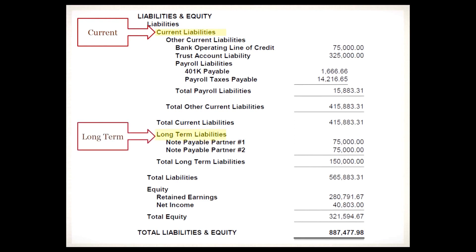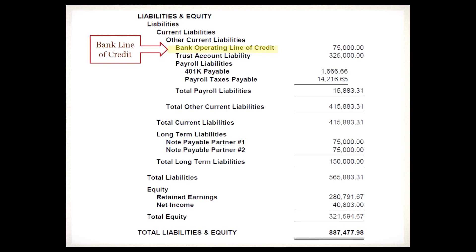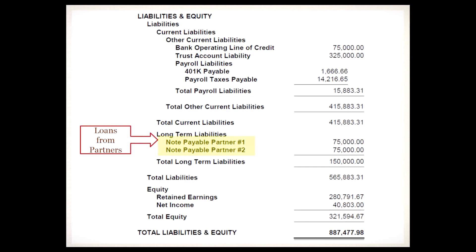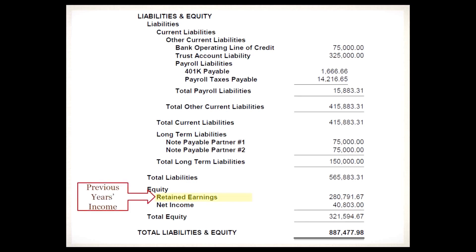Let's jump to the bottom section — the liabilities. There are two sections: current and long-term. A current liability is owed and due within one year; long-term is not payable for at least one year. We see a bank operating line of credit, and again the trust account liability matching the asset we noted earlier. There are also payroll-related liabilities — even in cash-based accounting, QuickBooks books payroll as a payable. Under long-term liabilities, there are loans from partners — long-term notes payable to law firm partners, likely from startup or during operation.